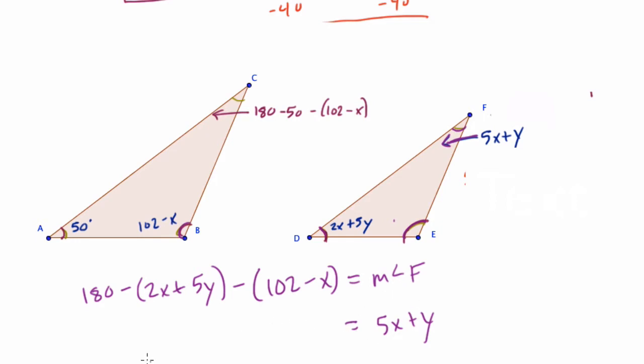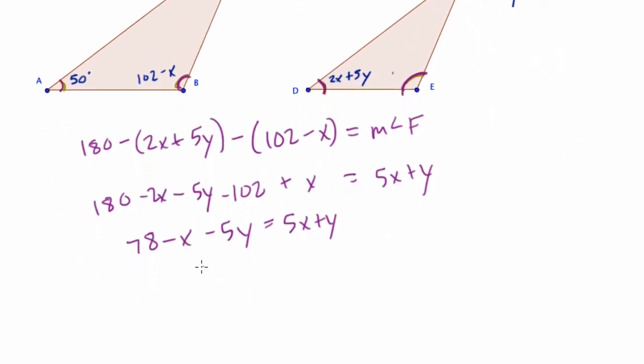But we know the measurement of angle F also equals 5x plus y. So I'm going to put that in for the angle. Here we get 180 minus 2x minus 5y minus 102. And minus minus x is plus x. So here we just simplify a little bit. 180 minus 102, that's 78. Negative 2x and x is minus x minus 5y. Now here this equals 5x plus y. But we want to get all the variables on one side. That will help us if we're using elimination. So I'm going to add x and add 5y over here. What do we get? Well, these two cancel out. And we get 6x plus 6y equals 78.